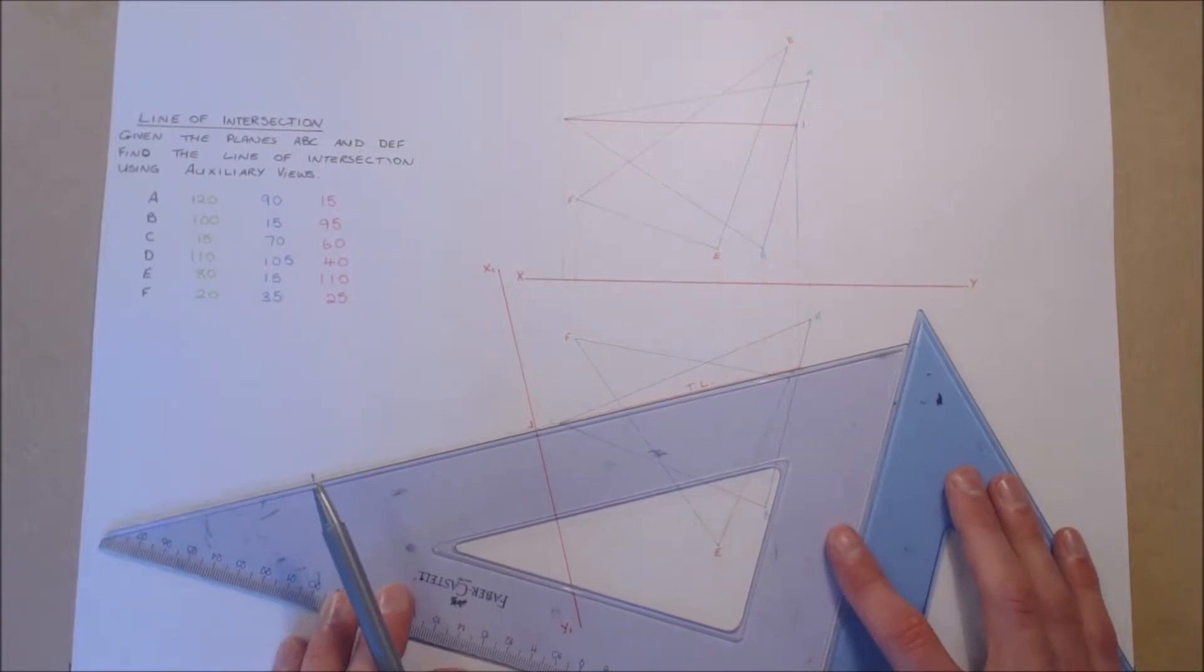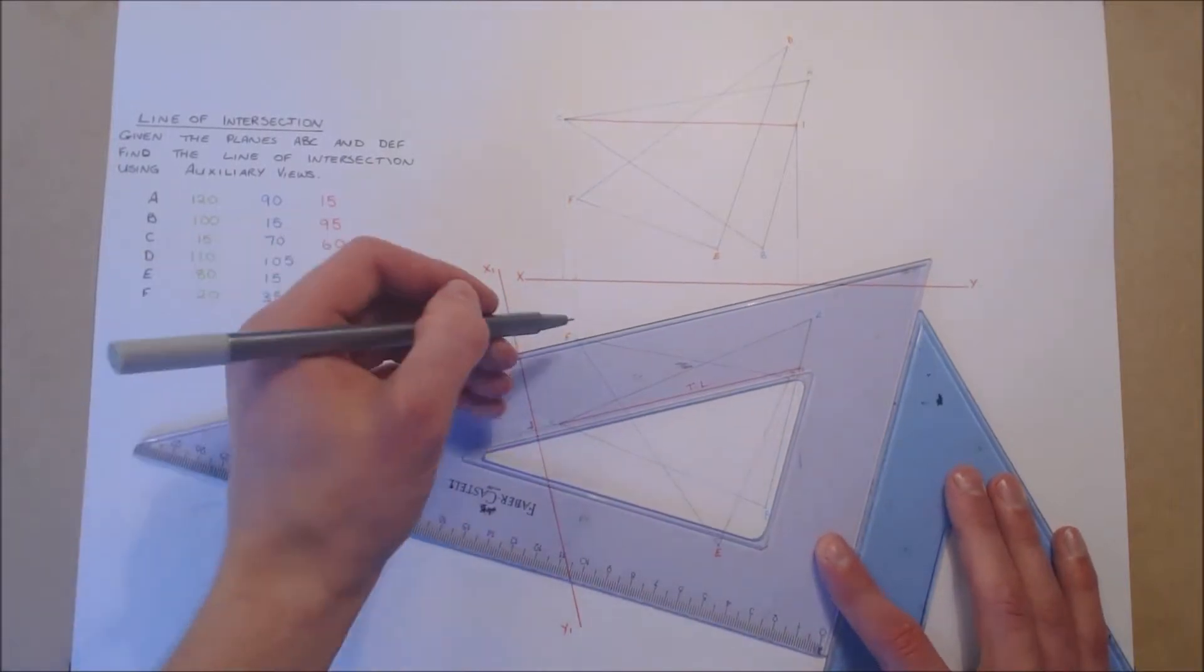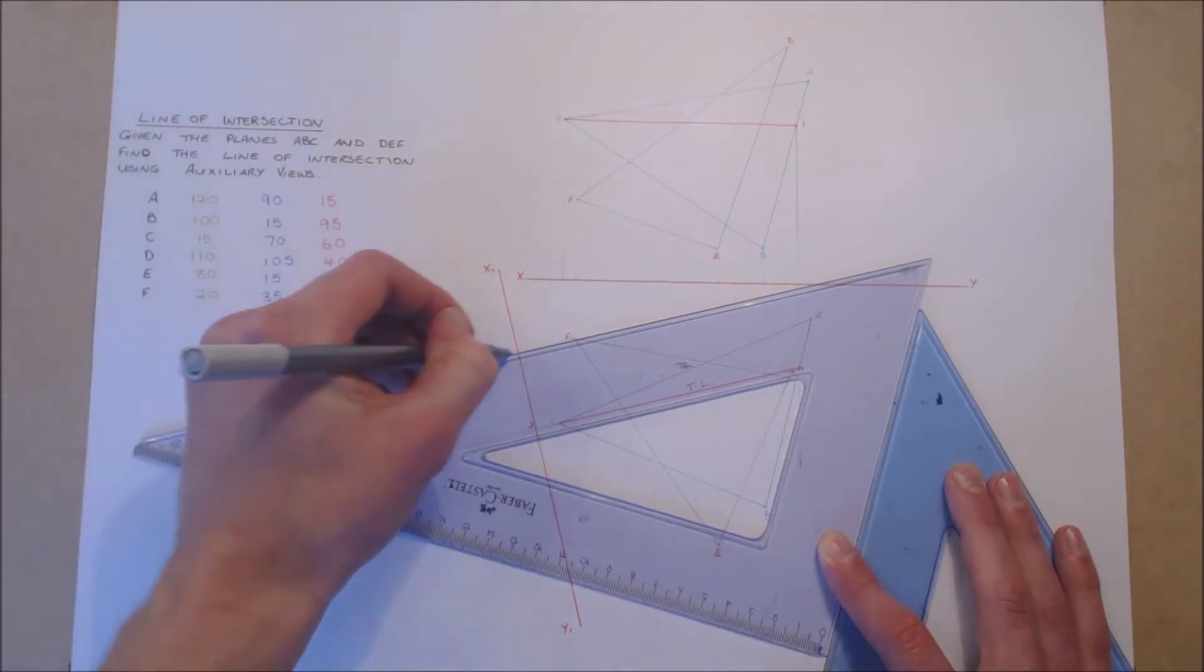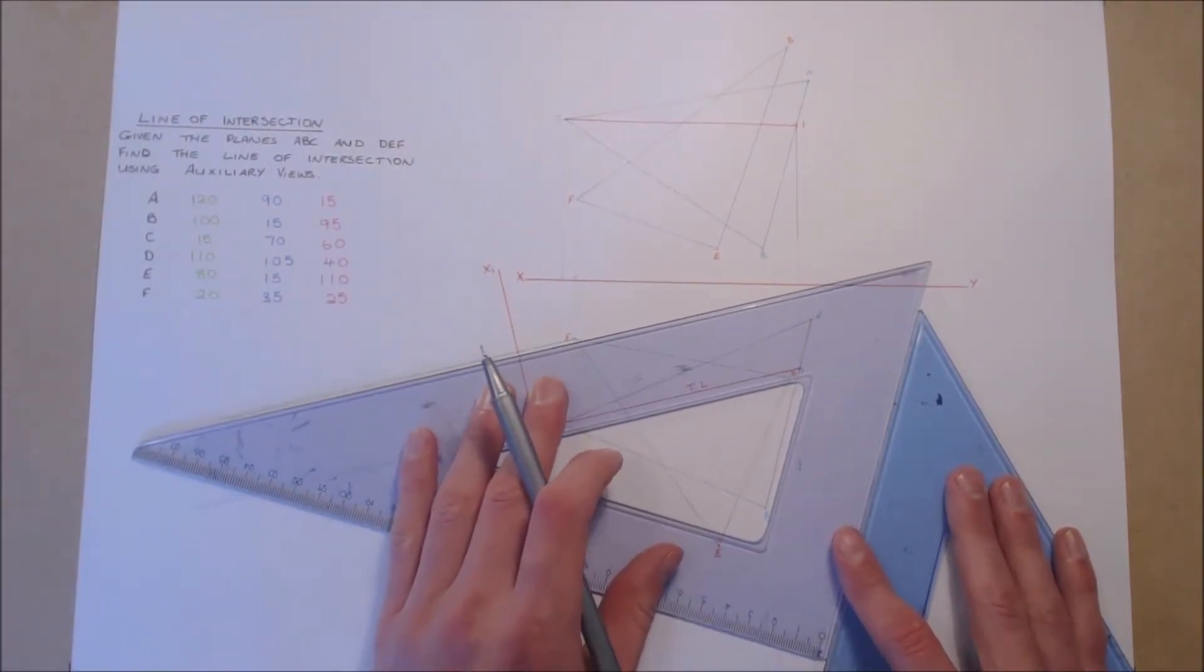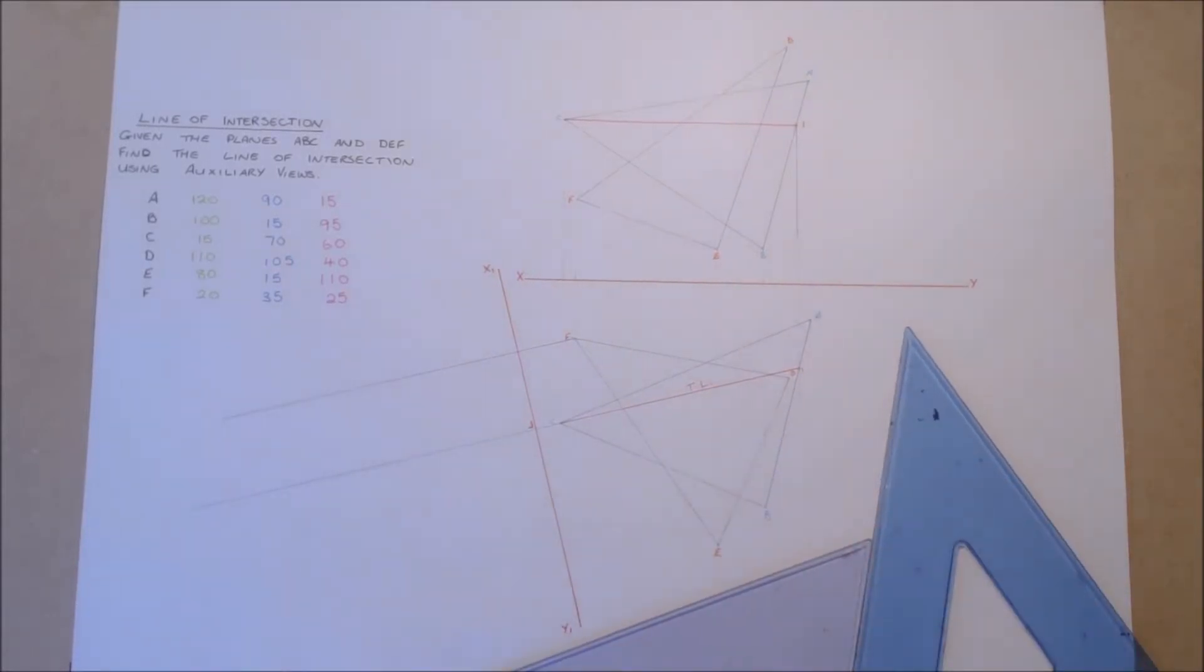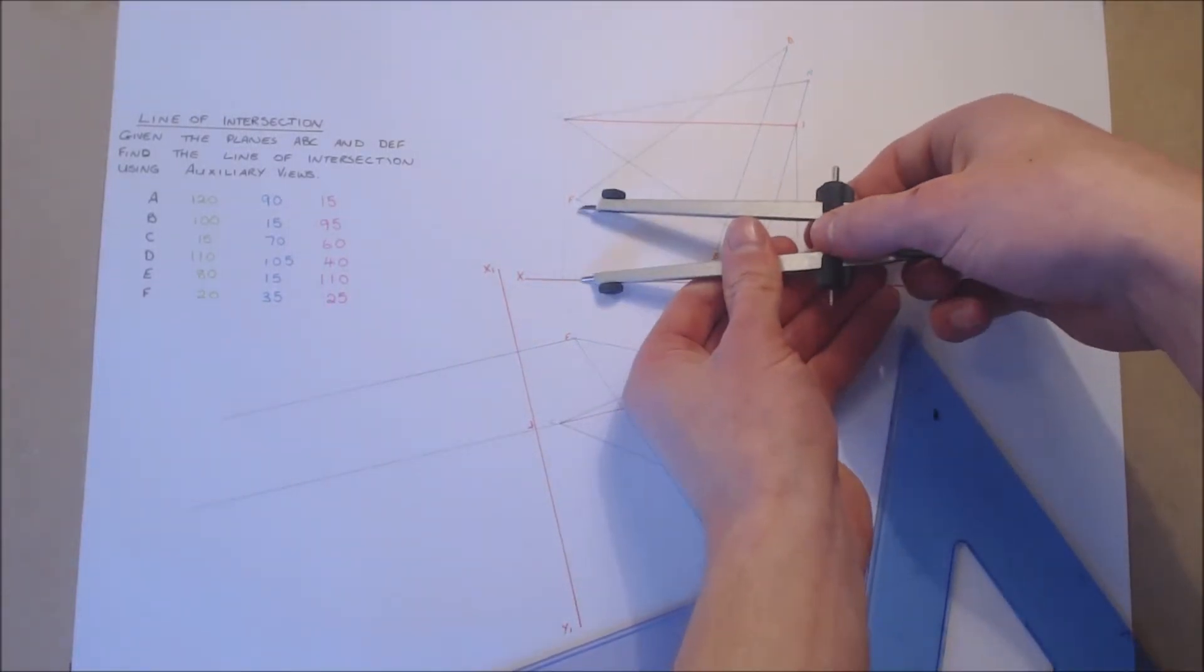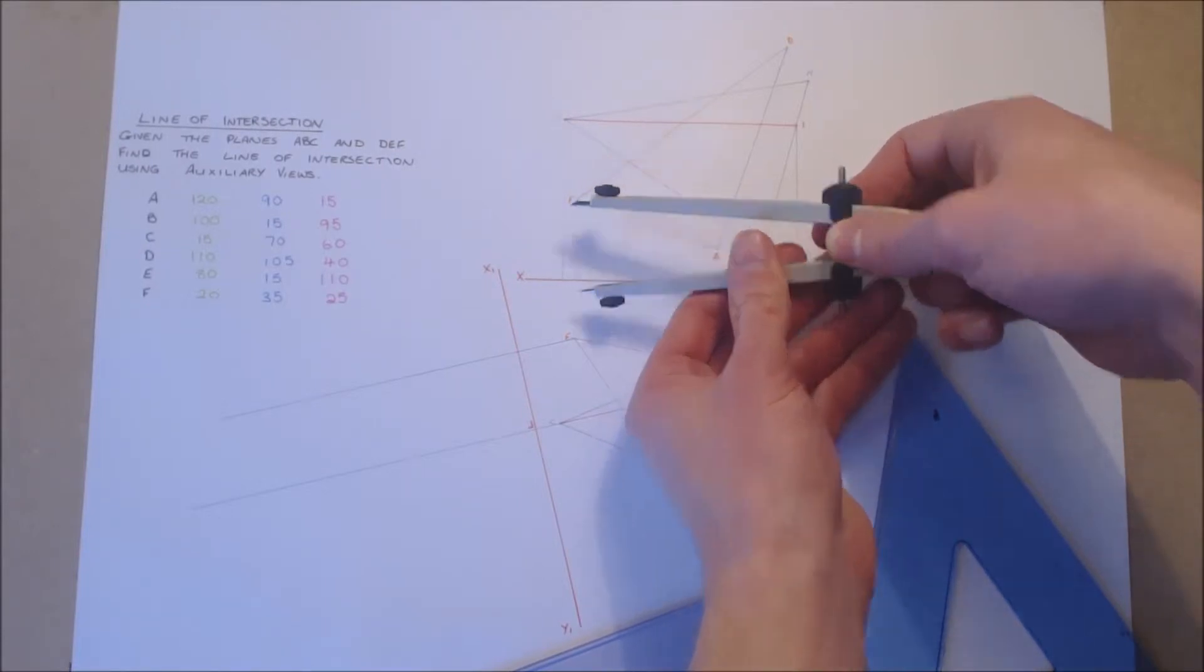All points are then projected parallel to the line of sight, i.e. our true length. The location of our points along our projection line is found using the distances from our XY line to our elevation. This is so because we are projecting an auxiliary elevation, therefore the heights come from our elevation.